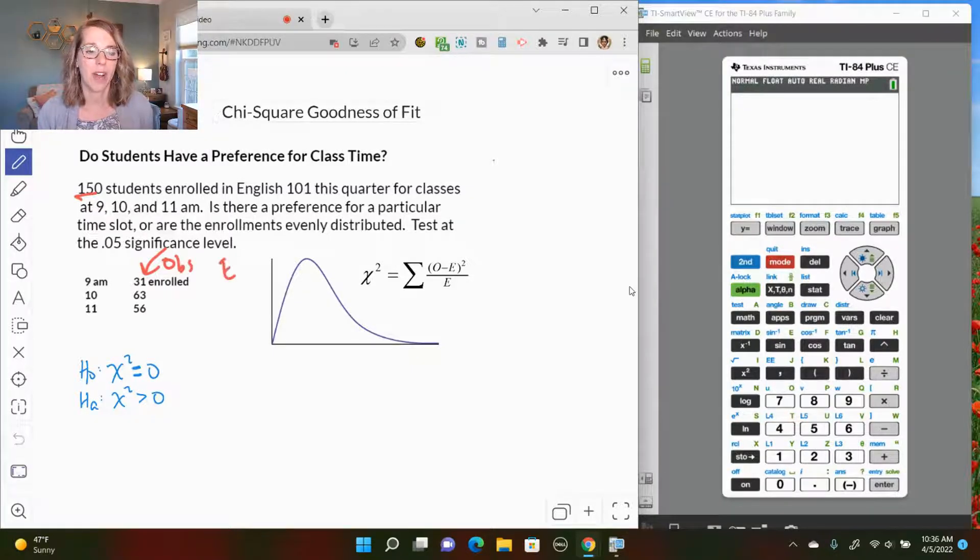Our expected values would be if there was no preference between the three. If there are no preferences between the three, that means that the 150 would be expected to be evenly divided, so that would tell me that I would get 50 in each of the three time slots.